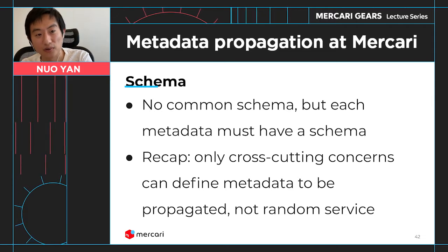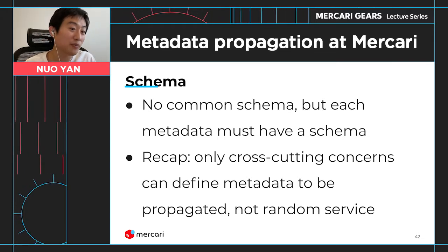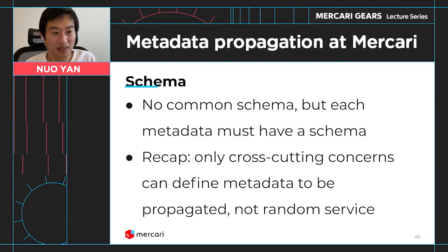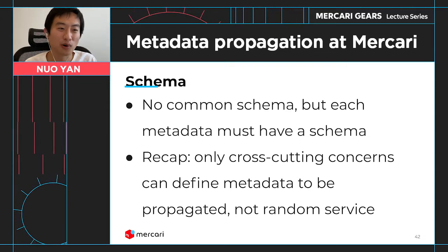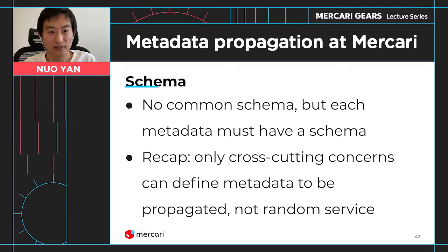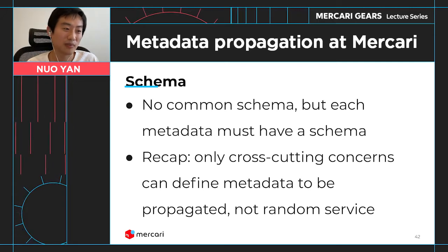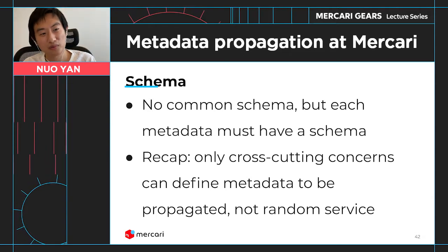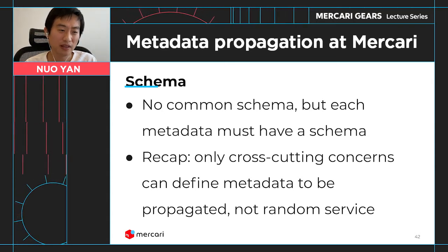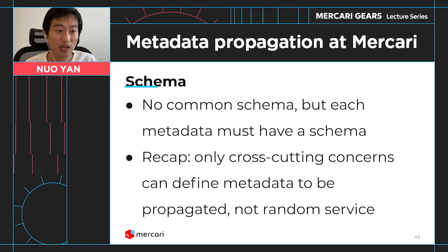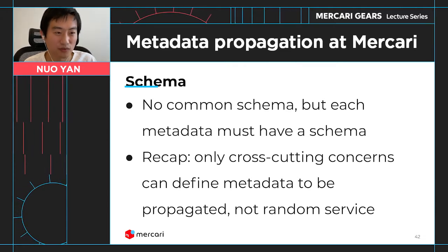Each metadata has its own defined schema. The reason we didn't want a common schema is that if there's a use case that needs to introduce new metadata, we want the format of the new metadata to be designed based on the use case. We don't want the propagation structure or an overall schema to dictate the format of new metadata. In some cases, it may even make sense for a metadata value to be a plain string or a JSON-serialized string instead of protobuf-serialized content. We want the infrastructure to be generic enough to support those use cases without restricting the format.